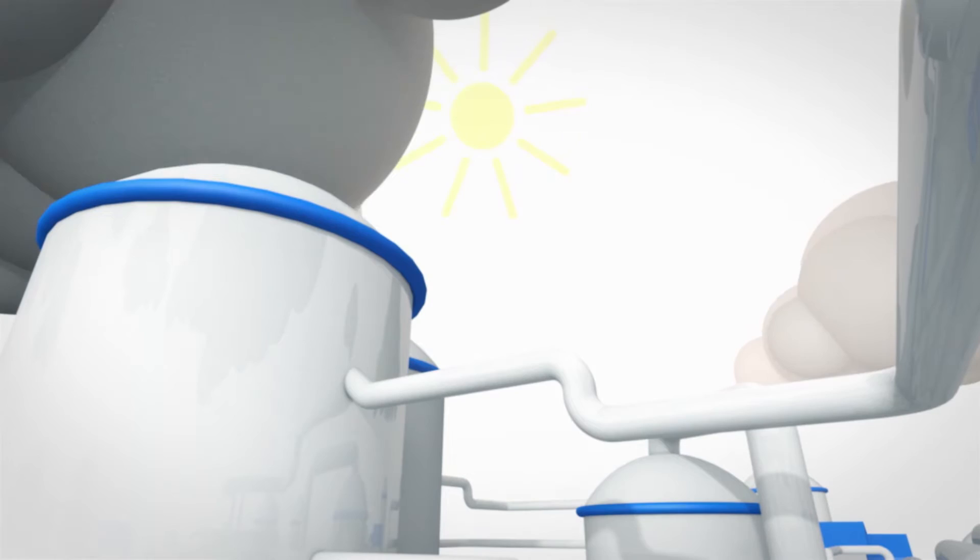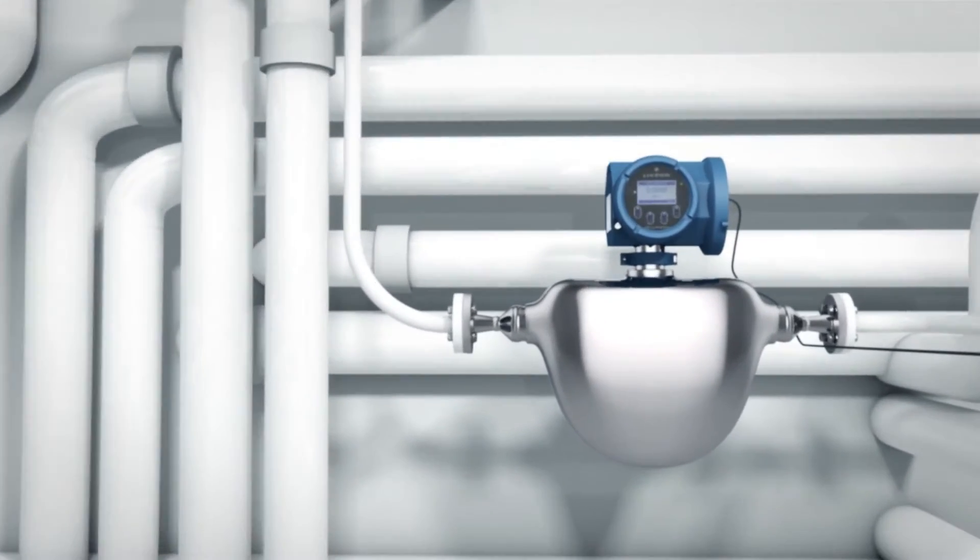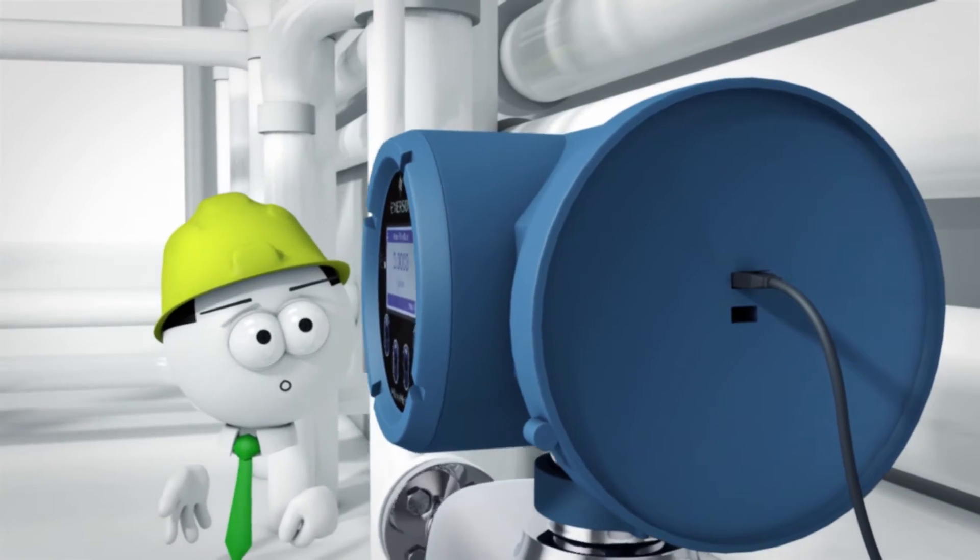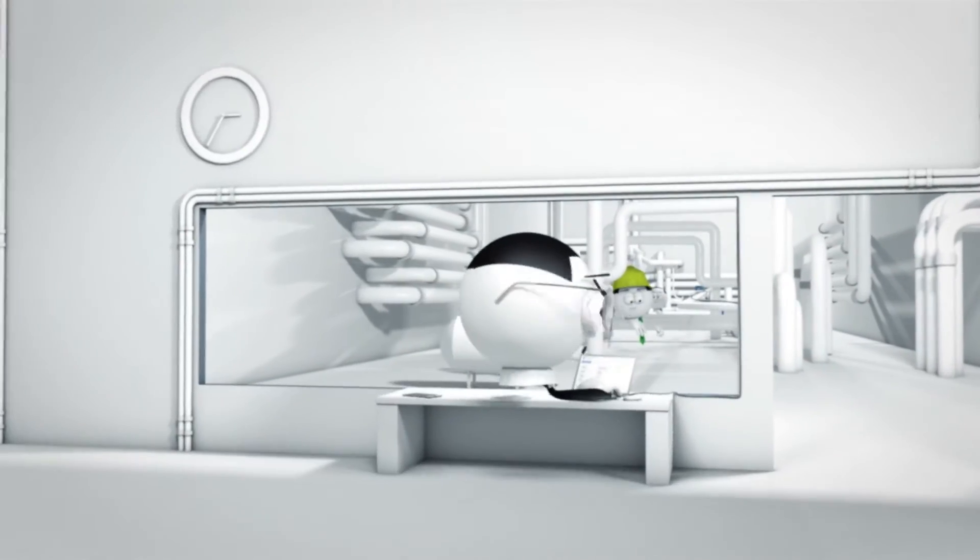The Micromotion 5700 Coriolis transmitter with native Ethernet gives you assurance in less than 90 seconds, accessible from any computer.